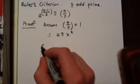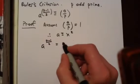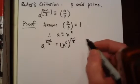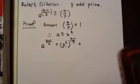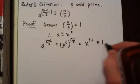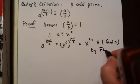Now let's consider A to the P minus 1 over 2. That's the same as X squared to the P minus 1 over 2, which is equal to X to the P minus 1. And that is congruent to 1 mod P by Fermat's Little Theorem.